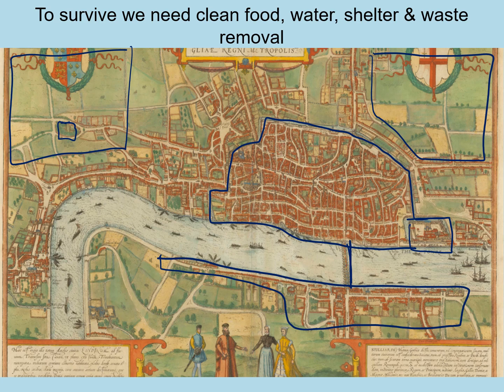Why are cities built on rivers? Rivers are great for water supply and getting rid of waste. Most people would have taken water from wells because that's clean, and any waste dumped in the river like the Thames — which was really just used as a dumping ground — would drift out to sea. The problem comes when the population grows: how do we make sure everyone has enough food, water, shelter, and waste removal? Let's compare this image to a current-day image.